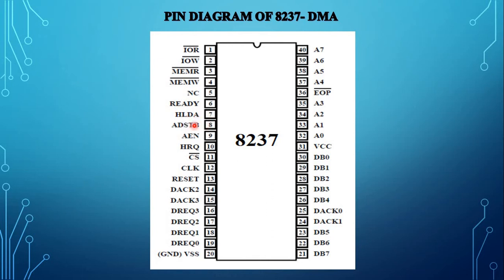Pin number 8 is the address strobe signal. It is an output signal used to latch the high byte memory address during DMA mode into an external latch. Pin number 9 is AEN, the address enable signal. This pin is used to disable other bus drivers during DMA transfer.